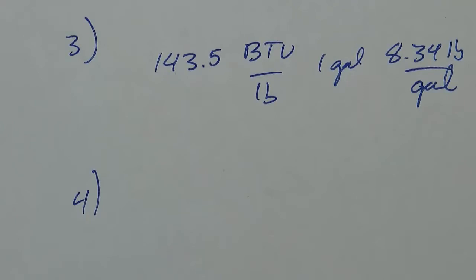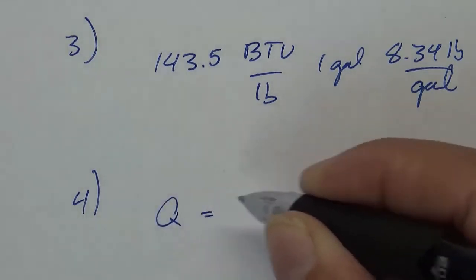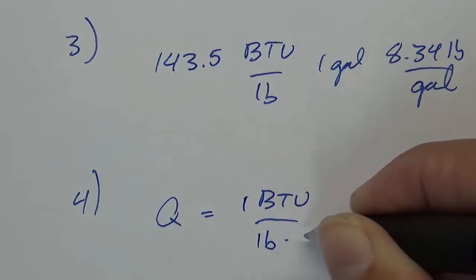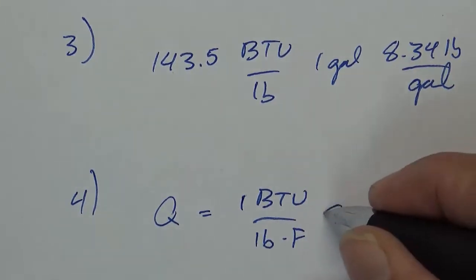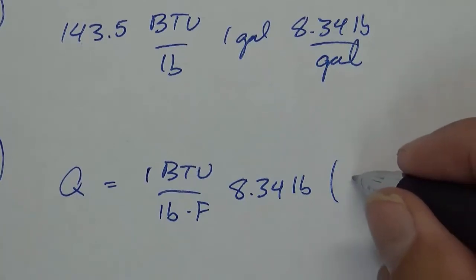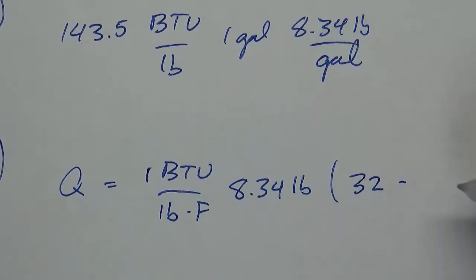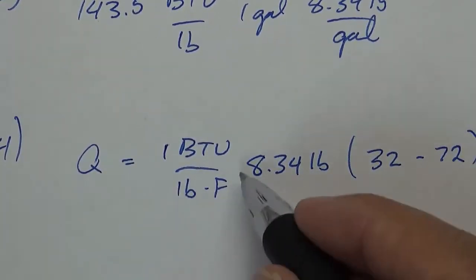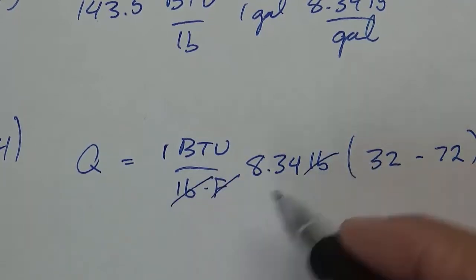Right. Now the last one, number four. What is the amount of heat energy in BTU that must be removed from a gallon of water at 72 degrees to lower the temperature to 32 degrees? So here's my formula: one BTU per pound per degree F. I'm just going to write the 8.34 pounds here because we know that. Now we've got the final temperature, which is 32, minus the initial temperature, which is 72. That's going to be F, so that's going to go away, that's going to go away. I'm going to be left with units of BTU.